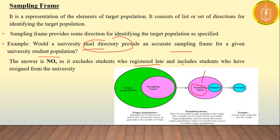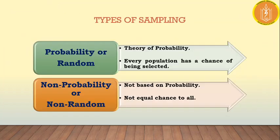There will also be some students who have resigned from the university, and new admissions who have not yet been added to the mail directory. So the mail directory would not serve as an accurate sampling frame — we need to be careful about what we take as our sampling frame.